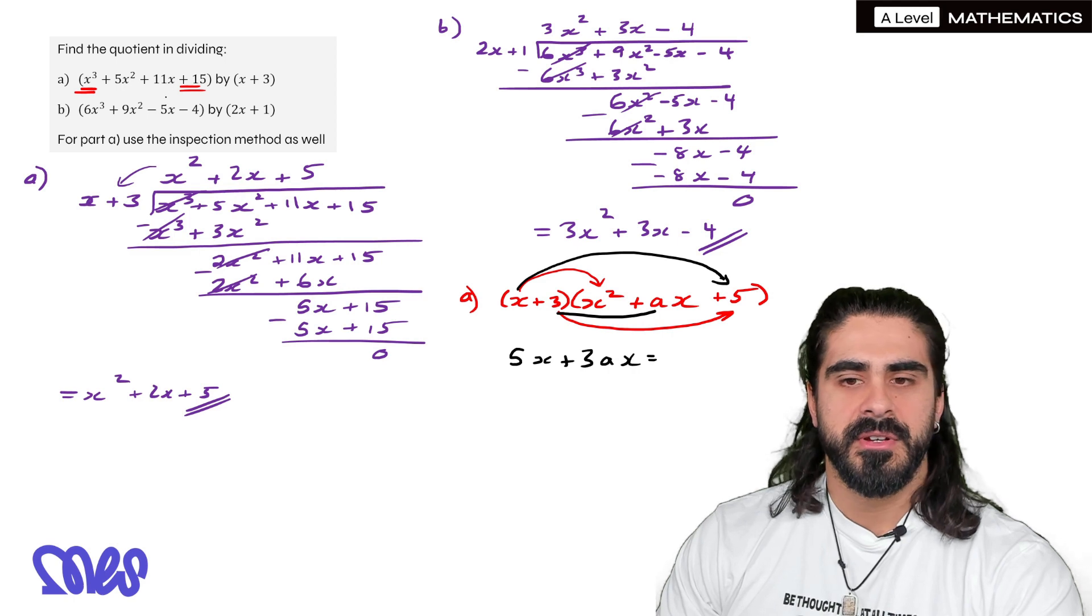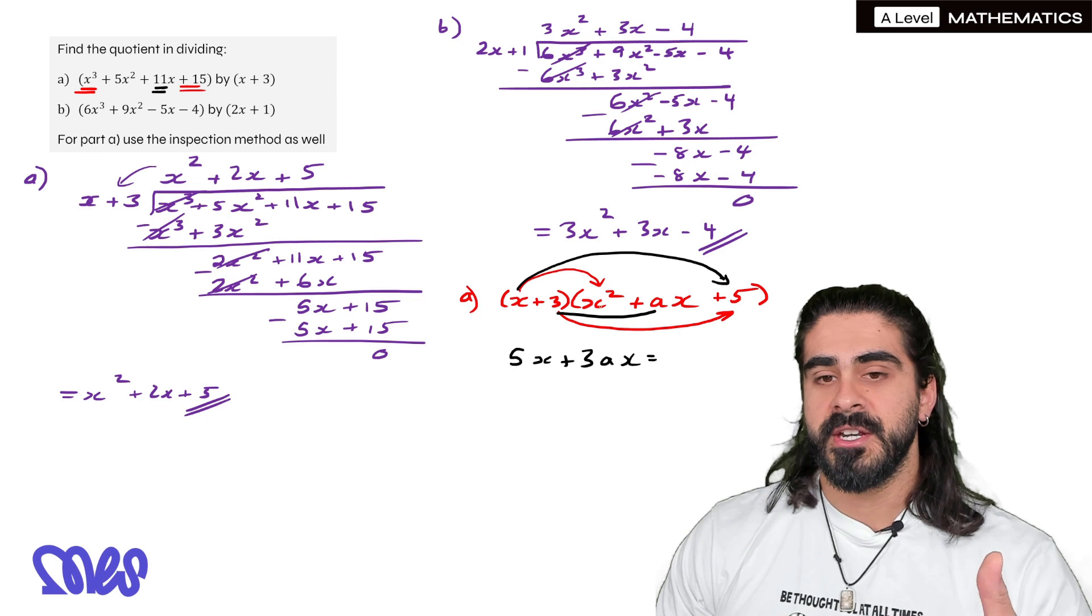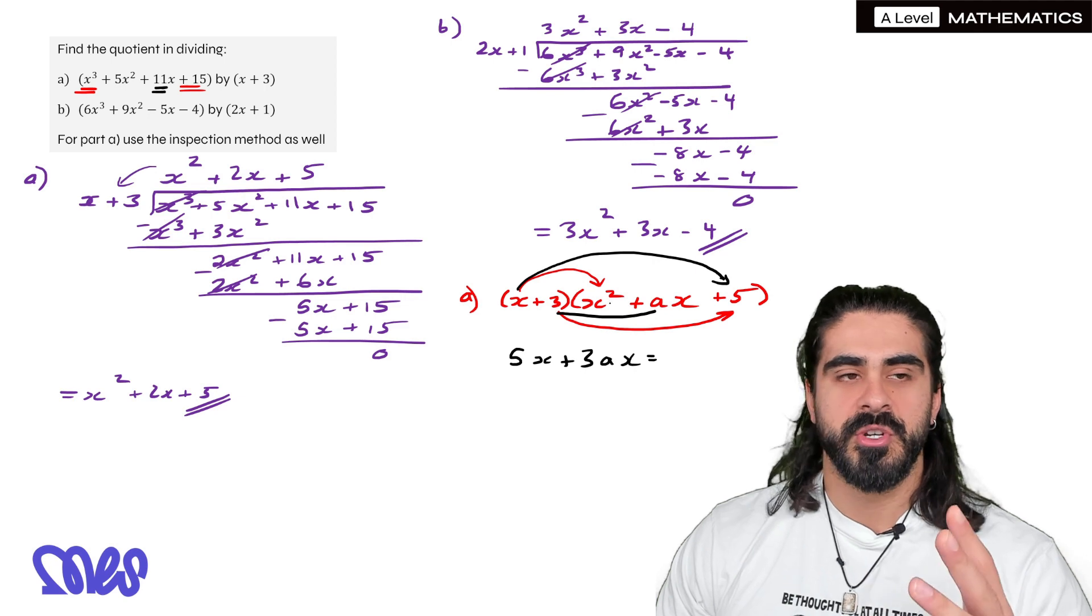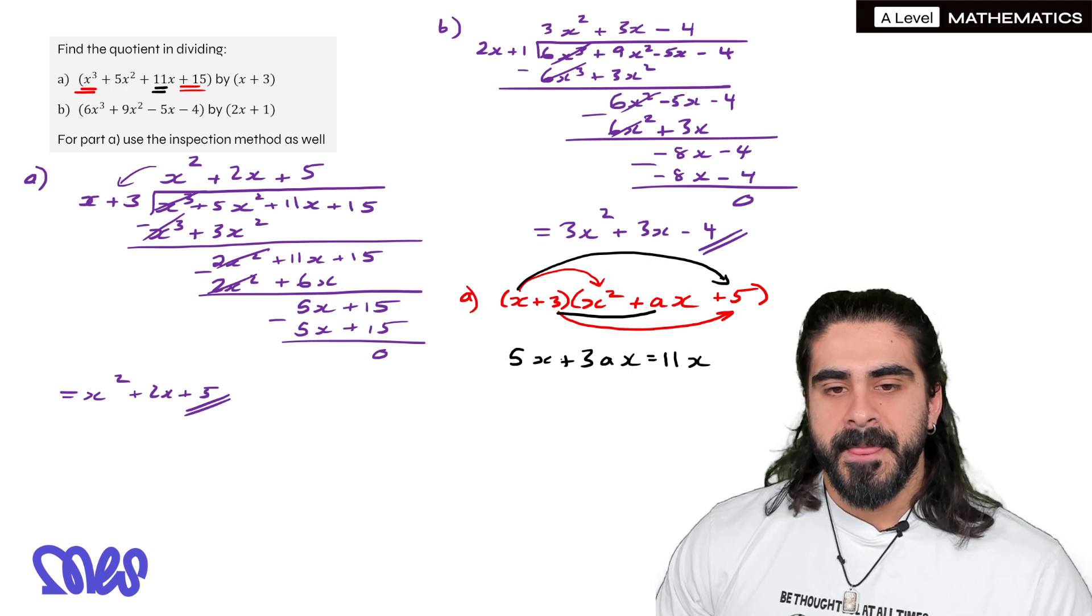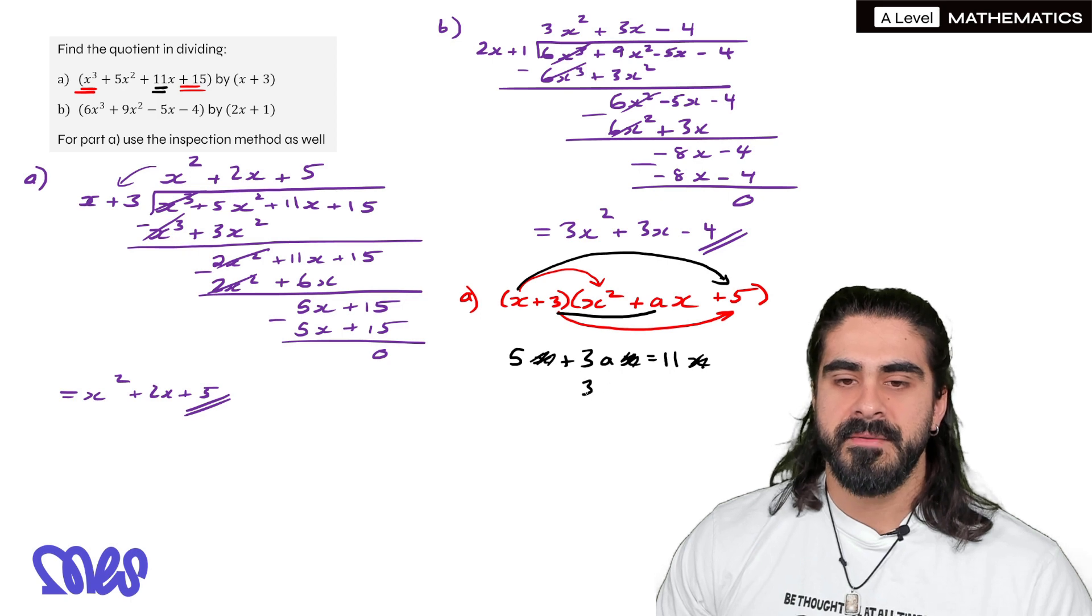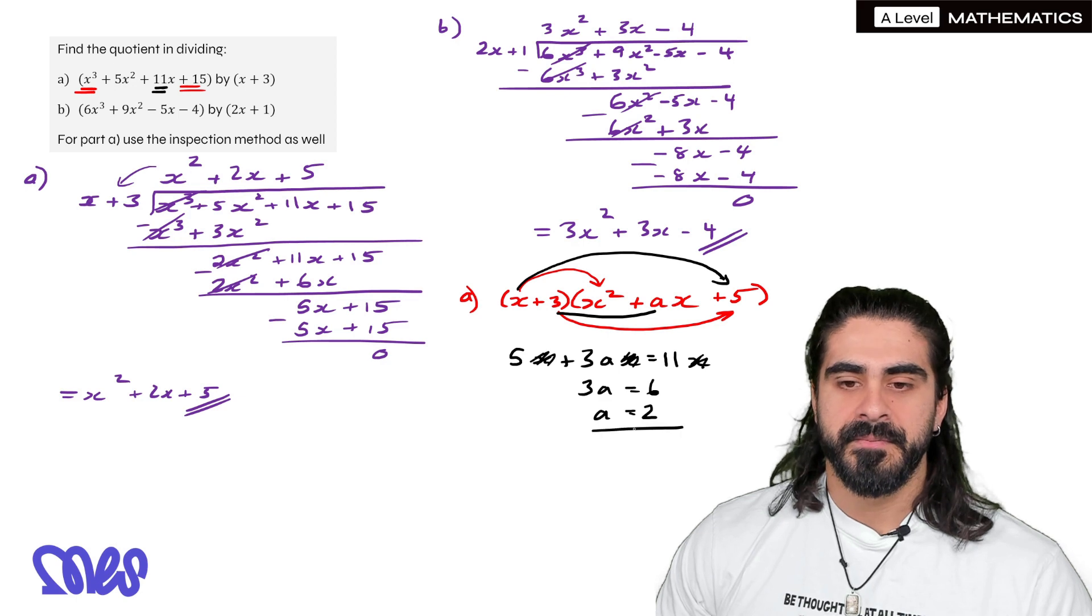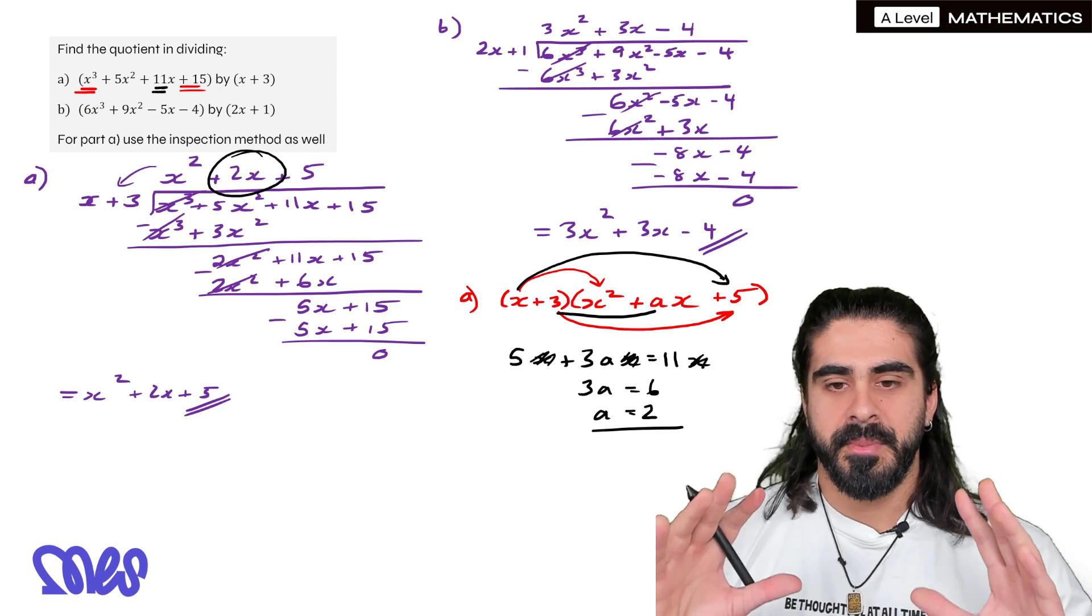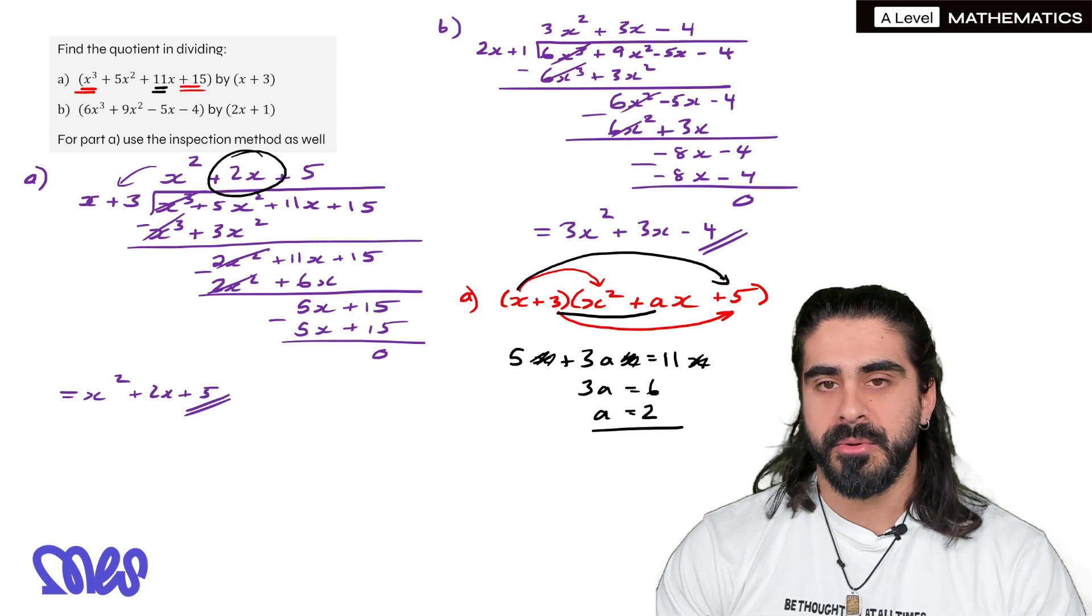Now what do these terms have to add to? Well they have to give you 11x. If you're multiplying out the x terms you could have actually done it with the x² terms. If you wanted to you would have done the x times ax and you would have done 3 times x². Whichever one comes to you first just do that one. So it has to be 11x. Now we can basically just ignore the x's here. We're looking at the coefficients. So 5 + 3a is 11. Minus the 5 over that would give you 6. Divide by 2, a is 2. And you can see that here we had 2x. So the inspection method actually requires a lot less work but it's just up to you whichever one you feel most comfortable with. I'll do one more example with the inspection method.